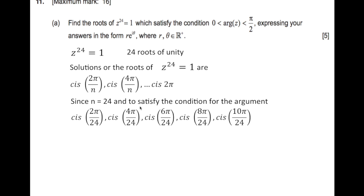Continuing: cis(4π/24), cis(6π/24), cis(8π/24), cis(10π/24), and so on up to cis(48π/24), which simplifies to cis(2π) = 1. We must satisfy the condition that the argument is between 0 and π/2. Since π/2 equals 12π/24, we have only 5 solutions satisfying this condition.